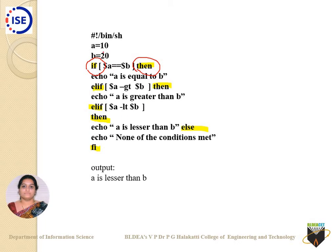What is the output now? Dollar A has a value of 10, dollar B has a value of 20. Is 10 equal to 20? No — that condition is not executed. Else if: is dollar A greater than dollar B? No — that condition is also not met and that statement is not executed. Then the last condition: is dollar A — that is 10 — less than 20? Yes. So echo 'A is lesser than B' — that message will be printed to the screen.